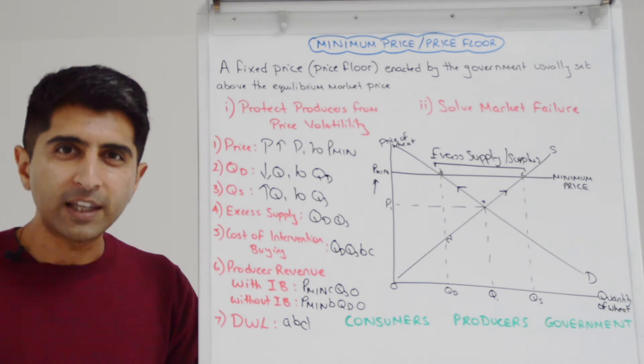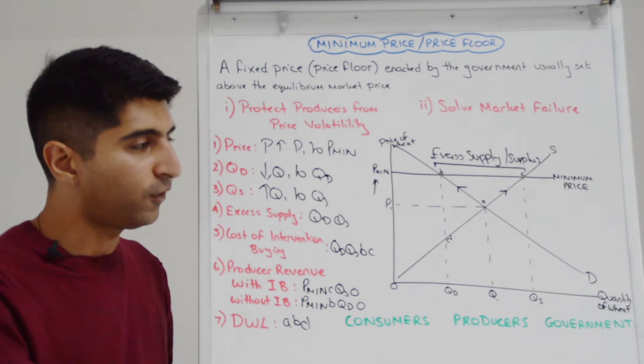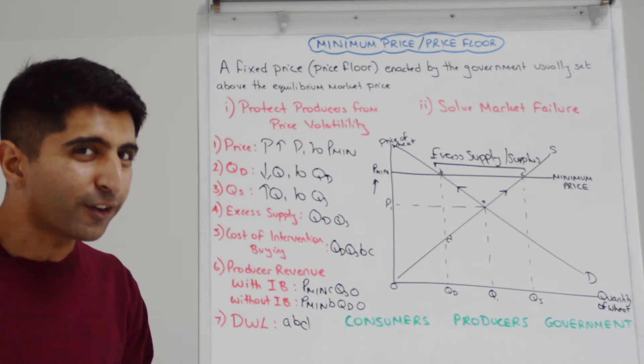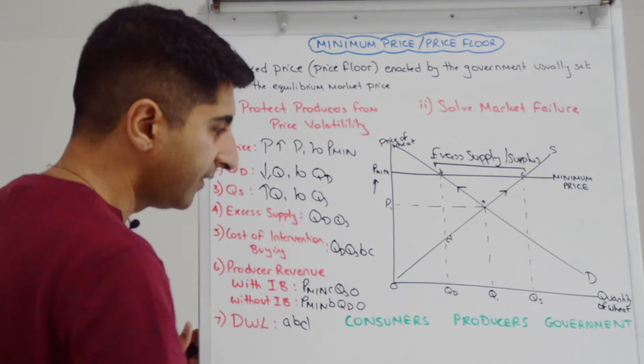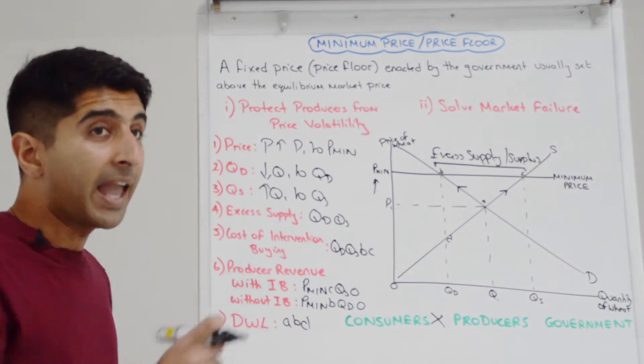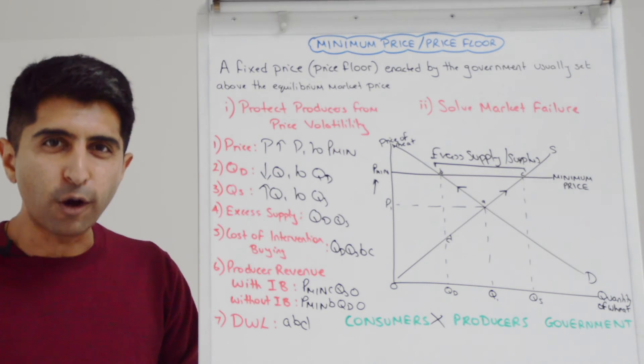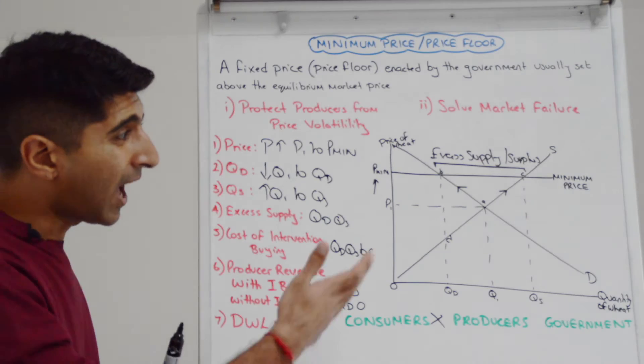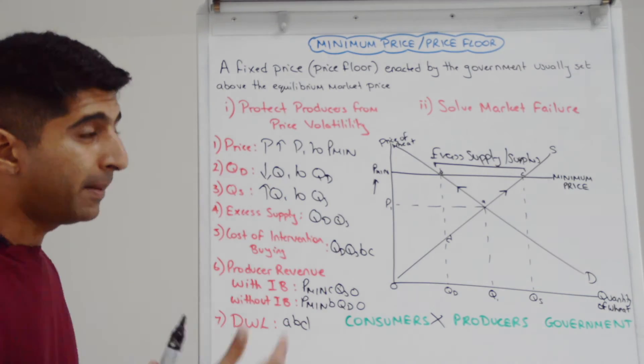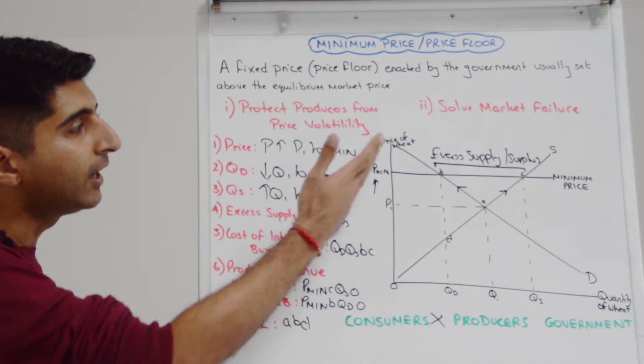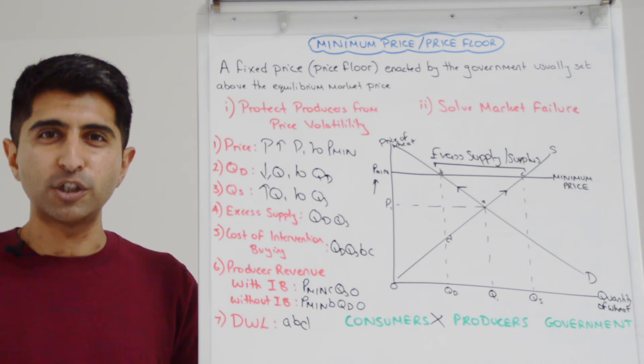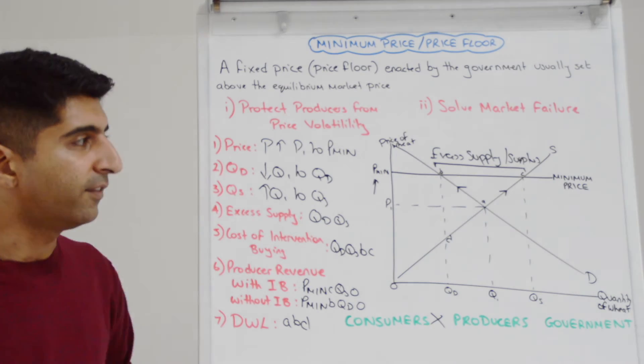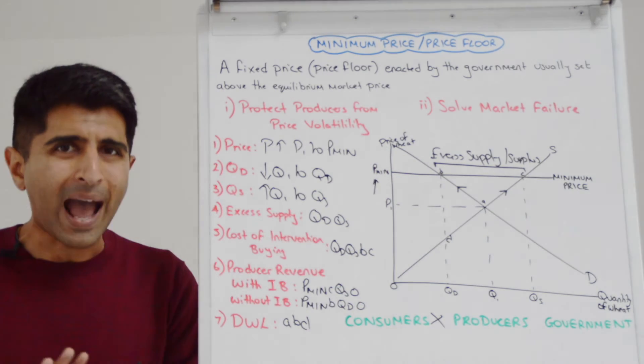But let's now finish by looking at the key impact of a minimum price on stakeholders, consumers, producers, and the government. Well, it's clear from the diagram that consumers are not fans of minimum prices because they're paying higher prices, their consumer surplus is being eroded, quantity is lower, choice is lower. At the same time, if you're a low-income household, affordability is much lower now. In that sense, we can argue minimum prices take a greater proportion of the income of the poor than they do of the rich. In that sense, their effect is regressive. So all of this is not good at all.